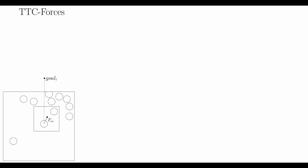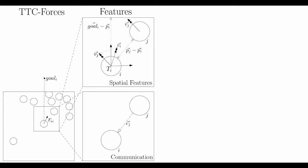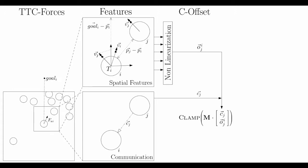Our approach requires some force-based collision avoidance algorithm for which we used TTC Forces. Each agent observes spatial features of their environment and nearest neighbor. Further, they receive communication channels from negative 1 to 1 of their nearest neighbor. We feed these features into a parameterized linear transform. The spatial features are first non-linearized to create decision boundaries and greater distinguish the communication between agents.